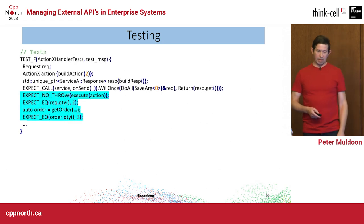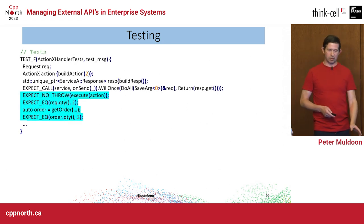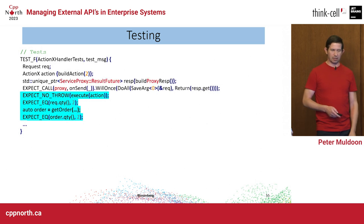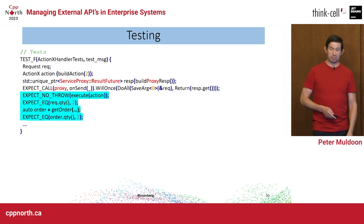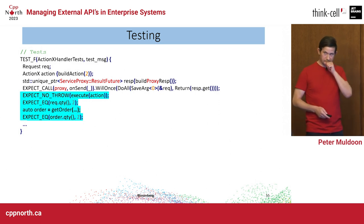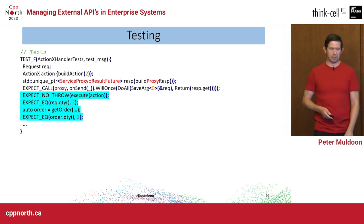For the happy path test, watch what changes — almost nothing on the assertion side changes, because I kept the global contracts the same.